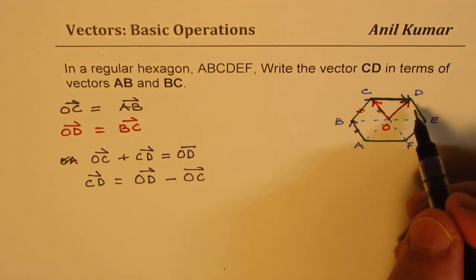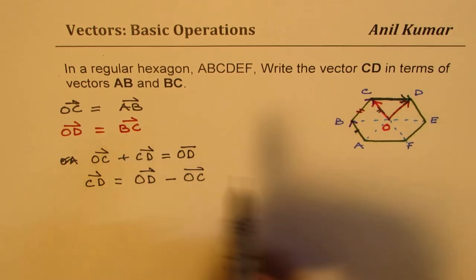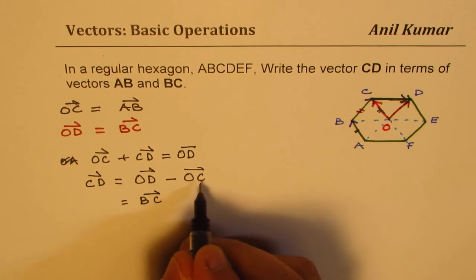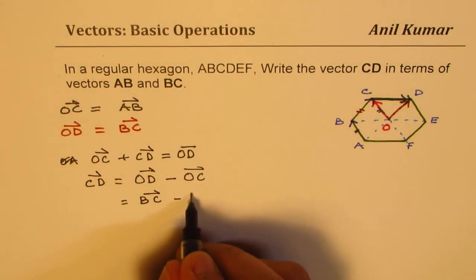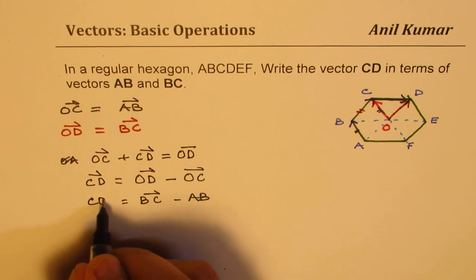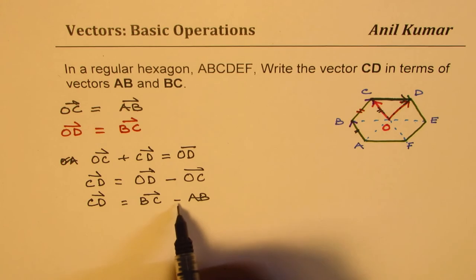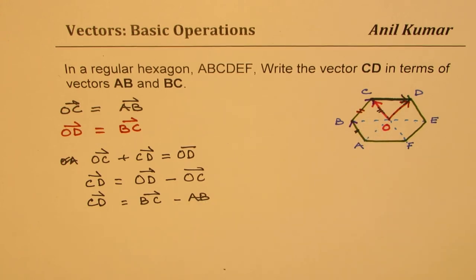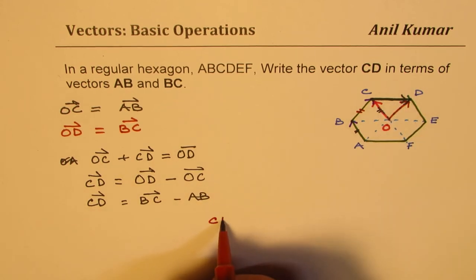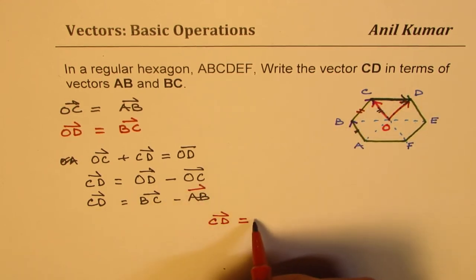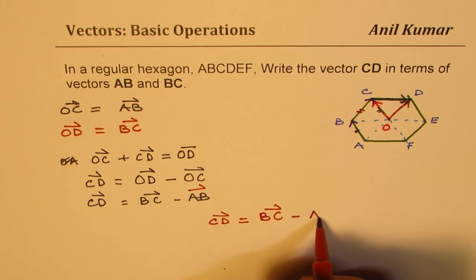Now OD we just figured out is same as BC, so we could write this as BC. And OC same as AB. So we get that the CD vector is basically equal to BC minus AB.